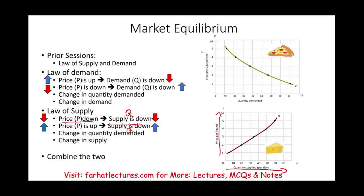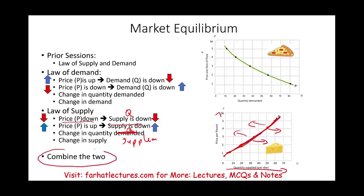We also discussed the change in quantity supplied, which is the change along the supply curve due to changes in prices. Then we discussed a change in supply where the supply line shifts to the right, which is supplying more, or shifts to the left. In this session on market equilibrium, we are going to be combining both supply and demand on the same graph. Let's go ahead and start our discussion.